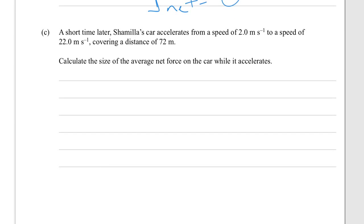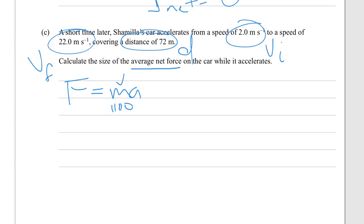C. A short time later, Shamila's car accelerates from a speed of 2.0 meters per second, that's VI, to a speed of 22.0 meters per second, that's VF, covering a distance D of 72 meters. Calculate the size of the average net force on the car while it accelerates. So average net force comes from F equals MA. We know M, which is that 1100 kilograms. We don't know A. So if we're trying to find A, and we have VF, we have VI, we have D.